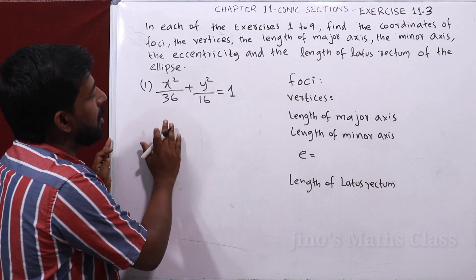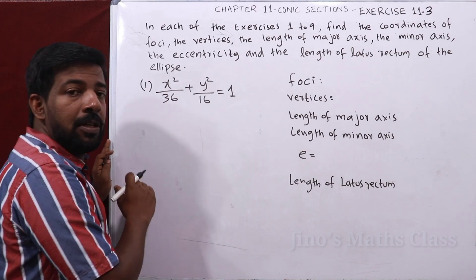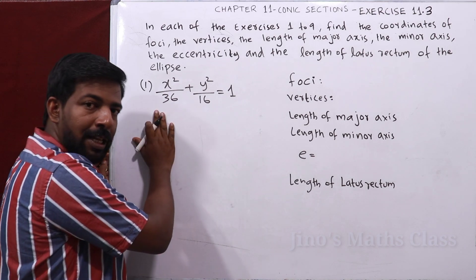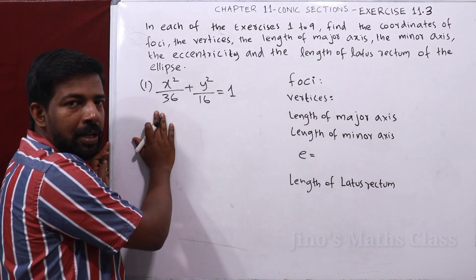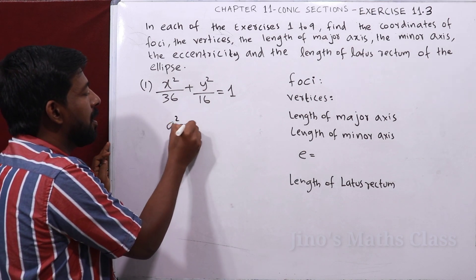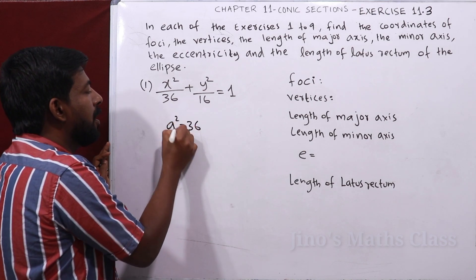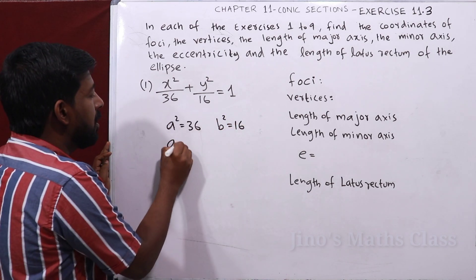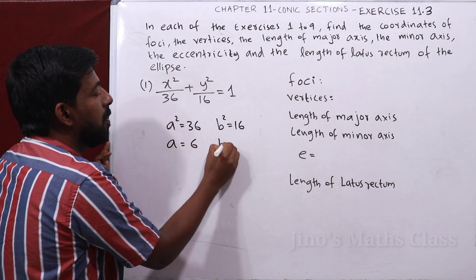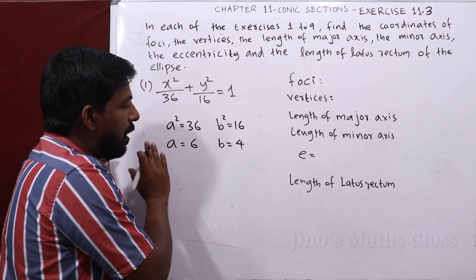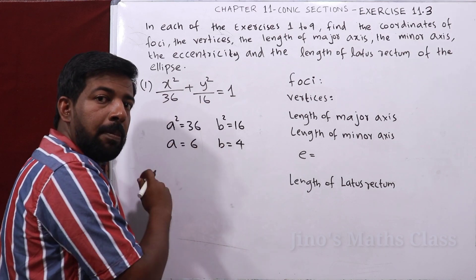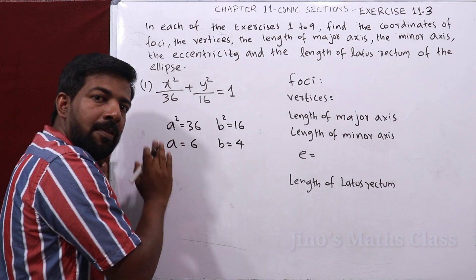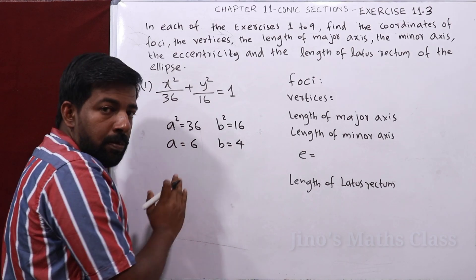The first question is x² / 36 + y² / 16 = 1. Here we have a² = 36 and b² = 16, so a = 6 and b = 4.